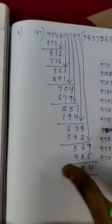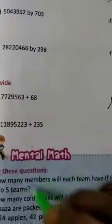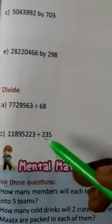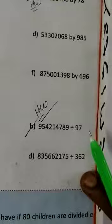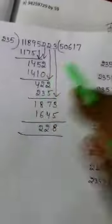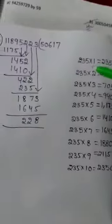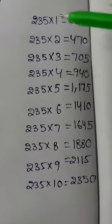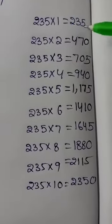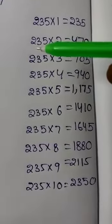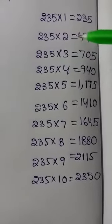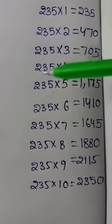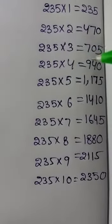Next, problem C: the sum is 235. Let's divide using the C sum. We build the 235 table: 235 into 1 is 235. 235 into 2 is 470. 235 into 3 is 705. 235 into 4 is 940.